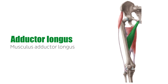The adductors of the hip are part of the inner hip musculature and range from the lower pelvic bone to the femur and knee region. They lie in between the extensor and flexor group of the thigh muscles. The hip adductors shape the surface anatomy of the medial thigh. This tutorial will feature one of the adductors known as the adductor longus.